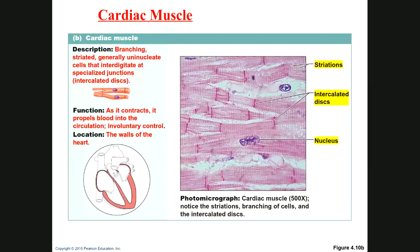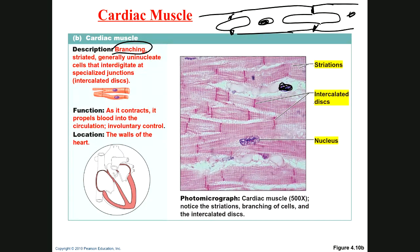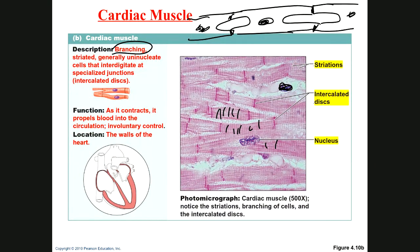Cardiac muscle cells are also elongated but have a different shape — they are branched. You can see how they branch and connect with the next cell. Each cell has one nucleus — they're uninucleated. The branches connect adjacent cells. Cardiac muscle cells are striated; you can see the pattern of striations, just like in skeletal muscle.